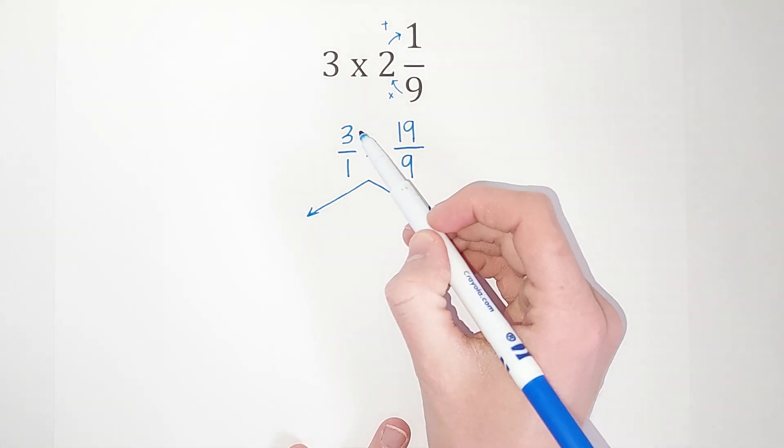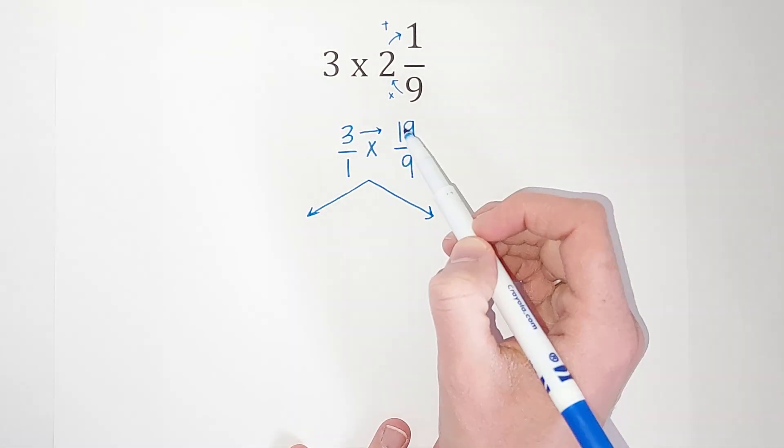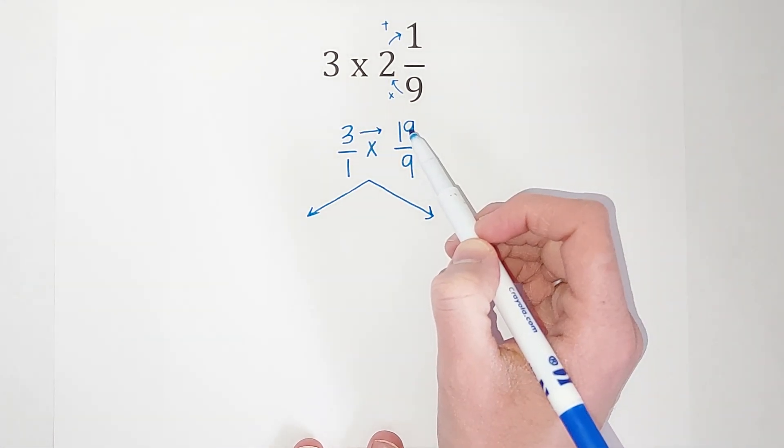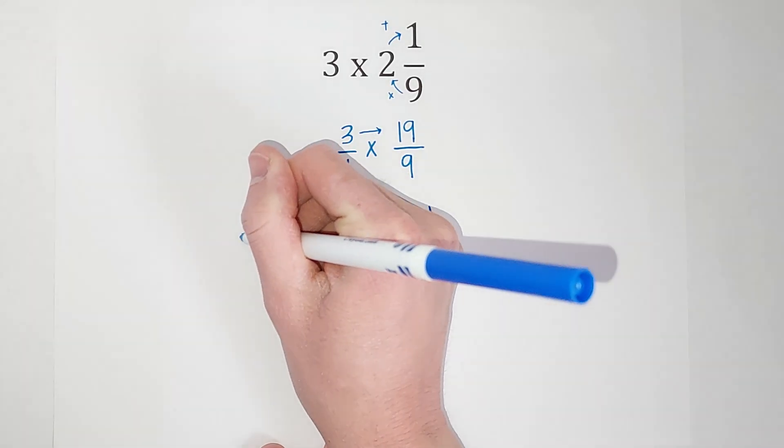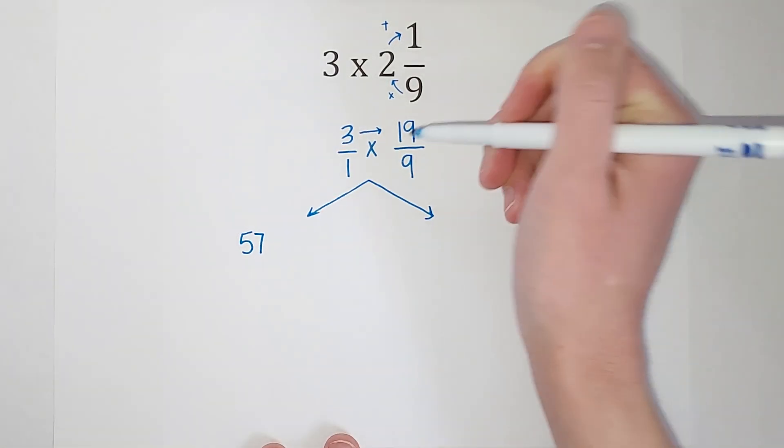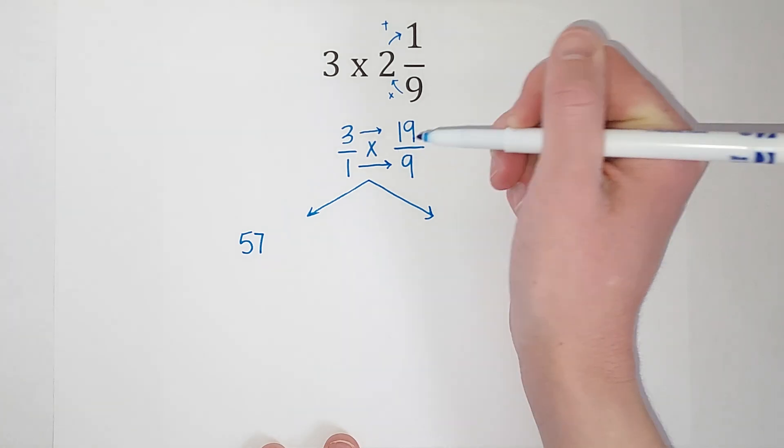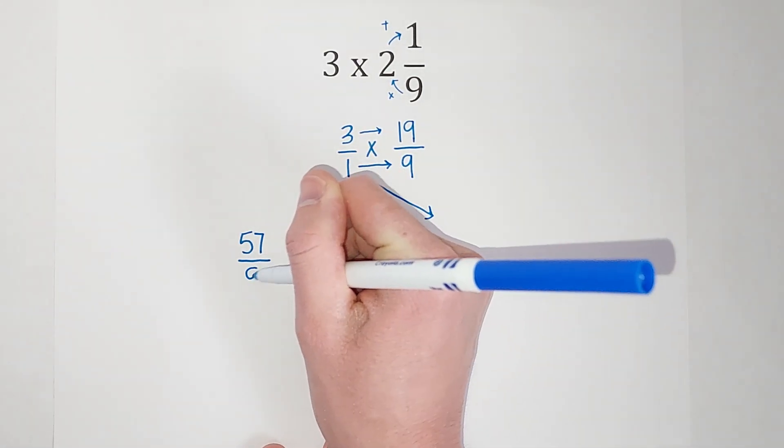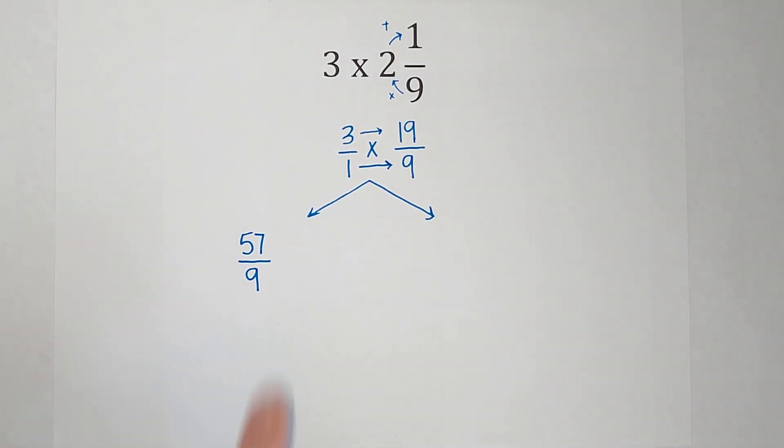So when we multiply first, I just multiply straight across. 3 times 19 gives me 57, and 1 times 9 gives me 9. So there's my answer.